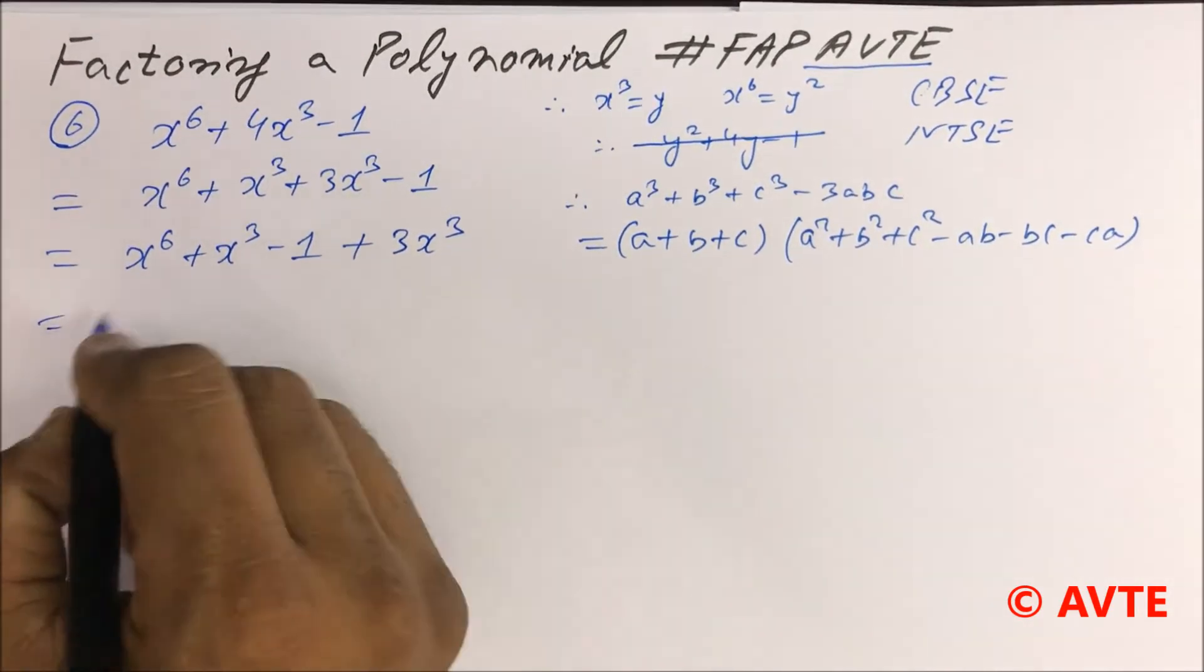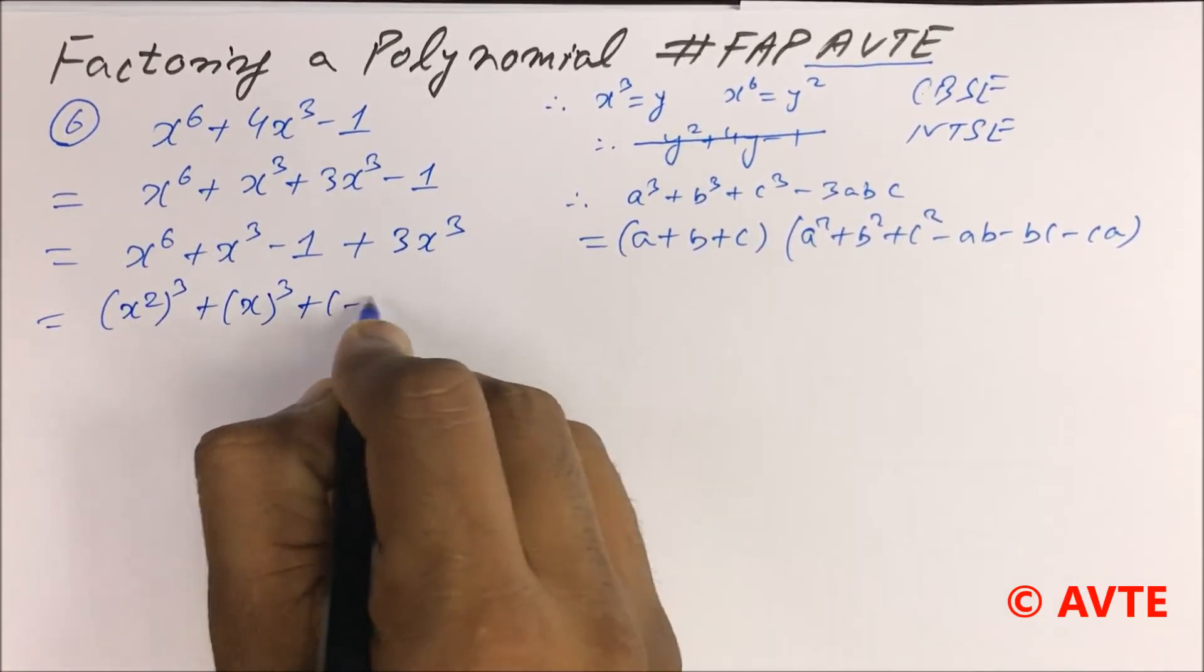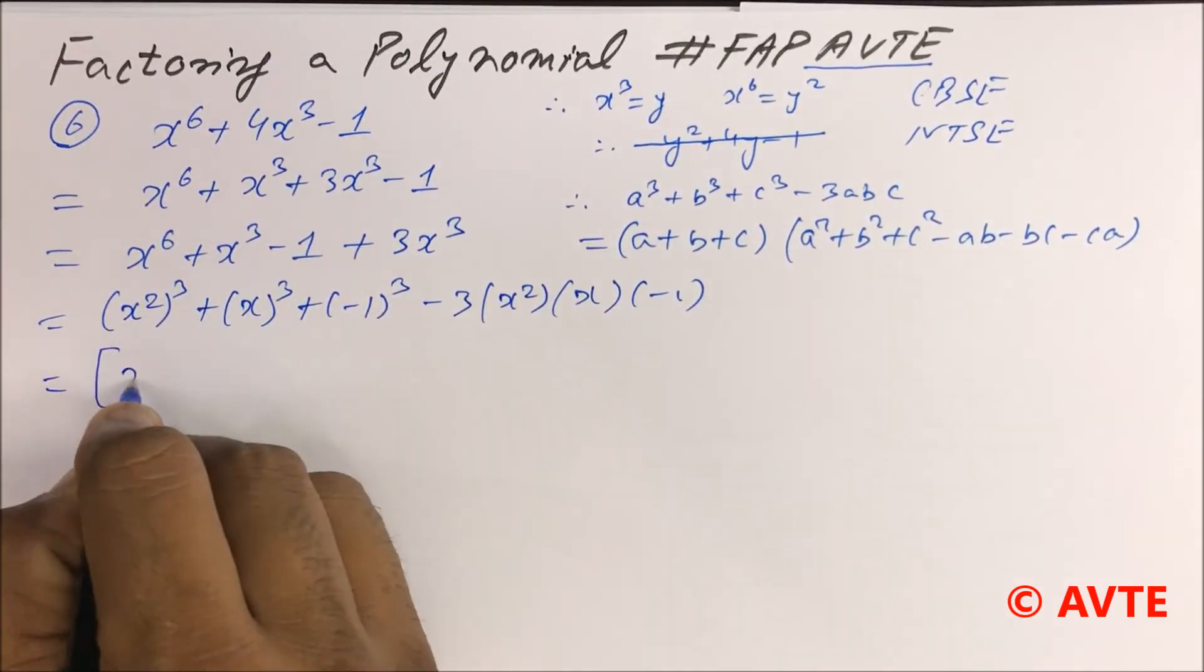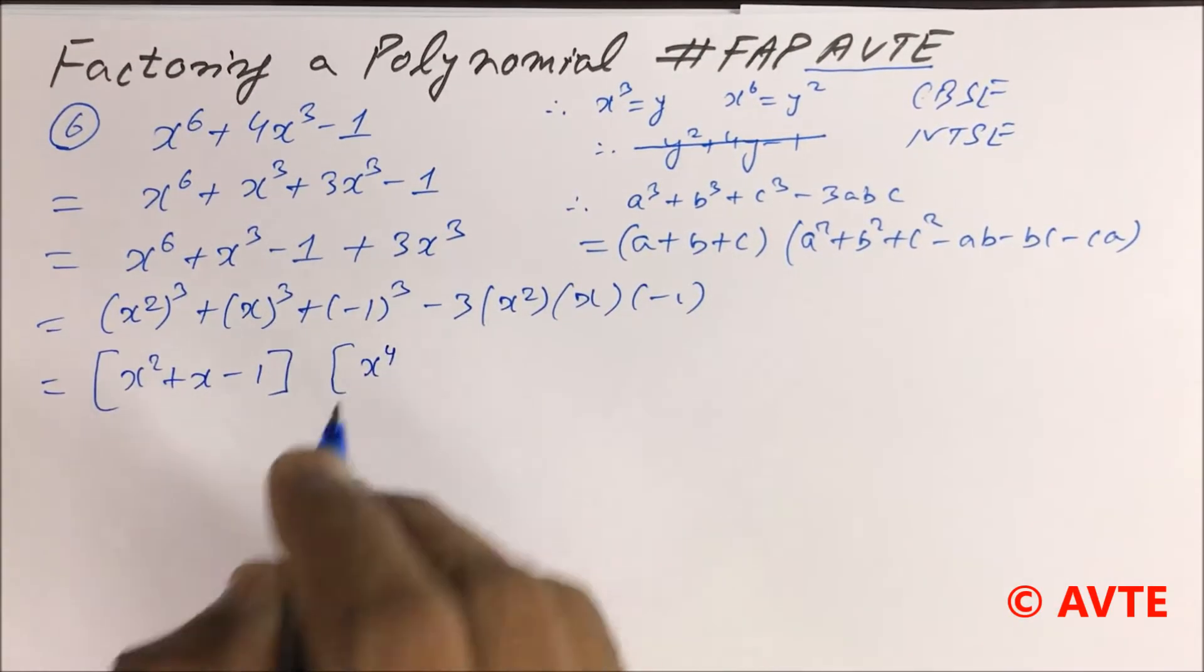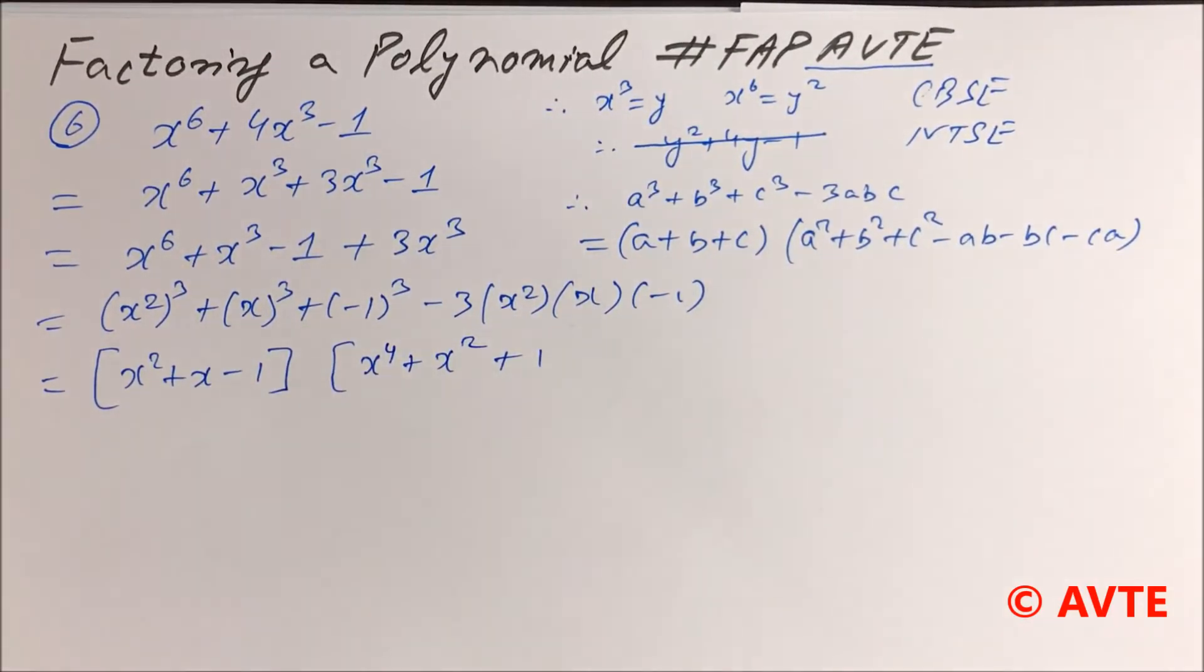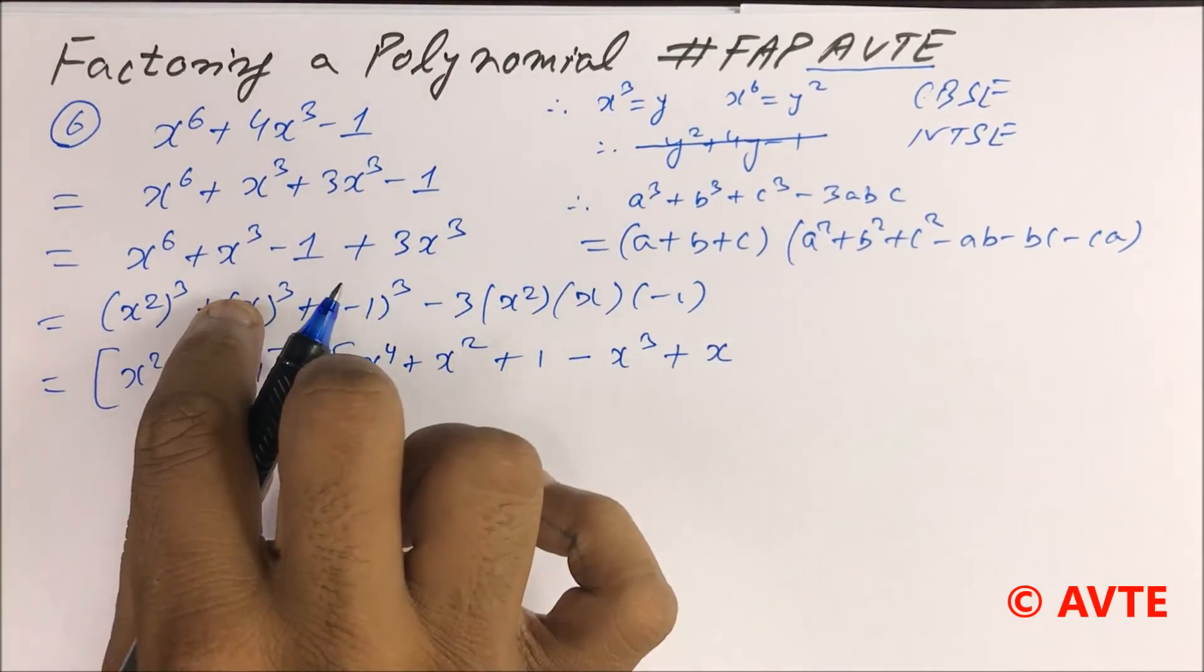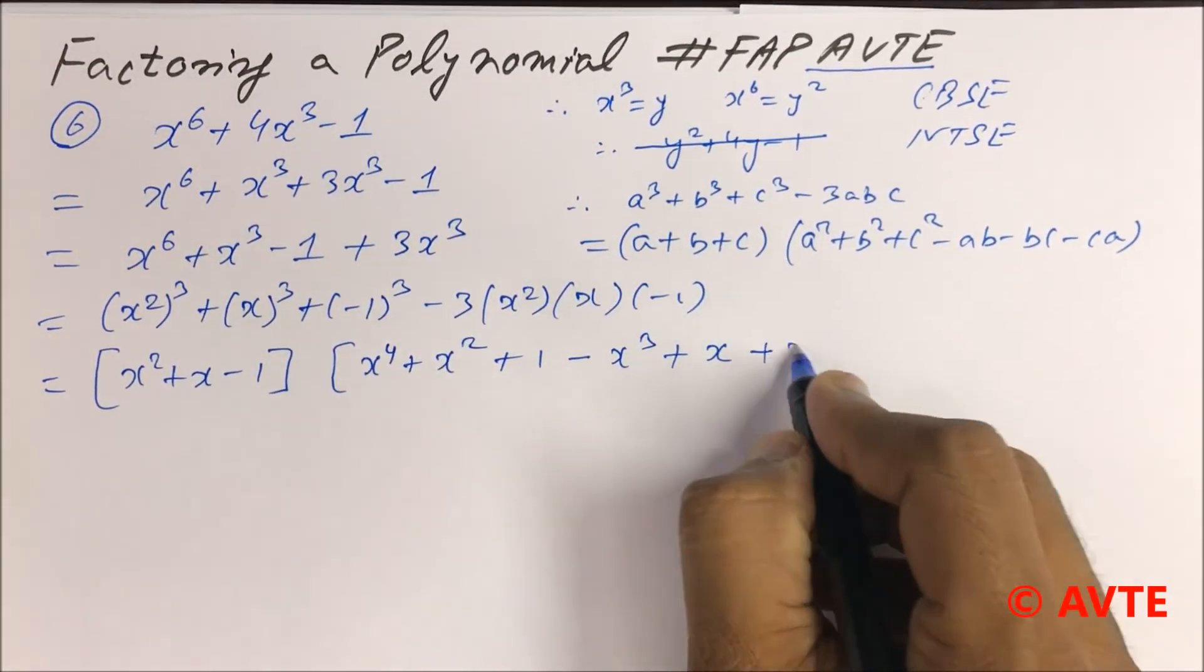So what do you do? This is x square cube plus x cube plus minus 1 cube minus 3x square into x into minus 1, as x square plus x minus 1 times x to the power 4 plus x square plus 1 minus ab minus x cube minus bc, because minus bc means minus into x into minus 1 is plus x, and minus ca is plus x square.